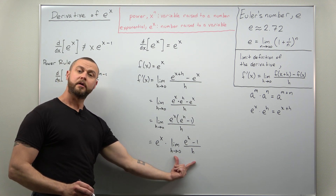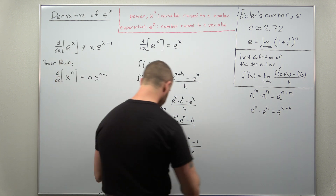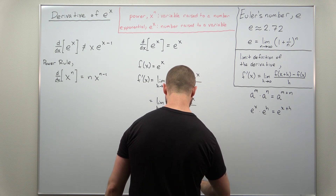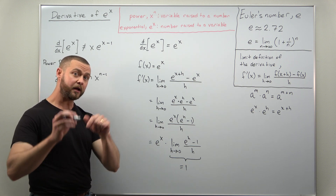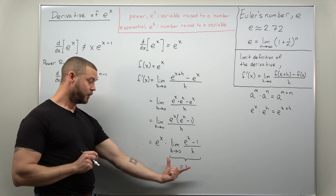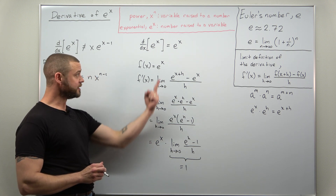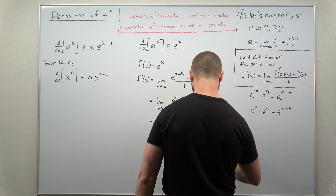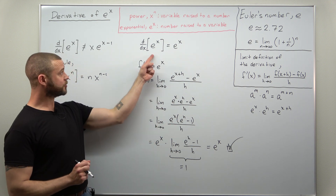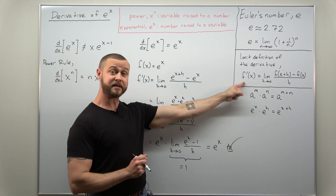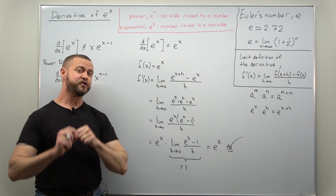The easiest way to see the value of that remaining limit is numerically: plug in values as h gets closer and closer to zero, and it's not hard to see that the limit of (e to the h minus one) over h as h approaches zero equals one. That's not a complete proof — a more detailed version is linked in the description. But it gives us e to the x times one, which is e to the x. That is why the derivative of e to the x is e to the x — proven via the limit definition, which you thought was useless!